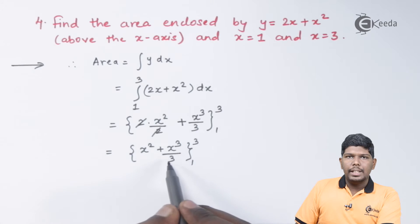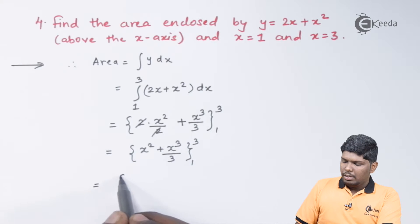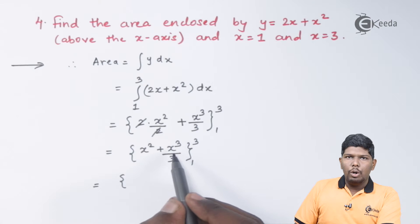We have x square plus x cube by 3 from 1 to 3. Now let us substitute upper and lower limits.